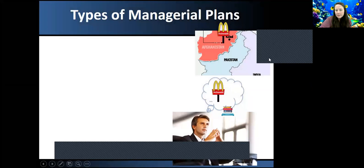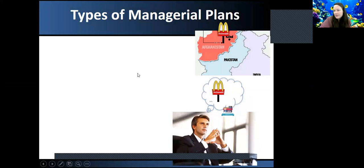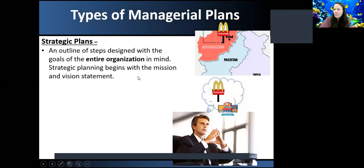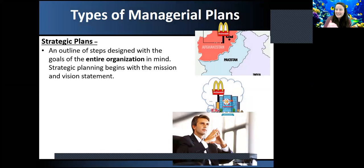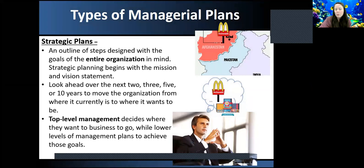Now, new stuff. We talked about different types of plans. The first one is a strategic plan. You can see with this man right here, he's thinking of a strategy to help get McDonald's expanded into some of the countries in the Middle East. Your top level management comes up with a mission and vision statement for the company, and they're in charge of leading the entire organization in a good direction over the next two, five, or ten years. They decide on where they want the company to go.